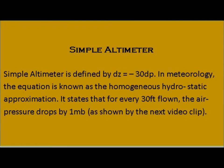Simple altimeter. The simple altimeter is defined by dz equals minus 30 dp. In meteorology, the equation is defined by the homogeneous hydrostatic approximation. It states that for every 30 feet flown upward, the air pressure drops by 1 millibar, as will be shown by the next video clip. The sea level pressure of the atmosphere is taken to be 1,013.2 millibars.